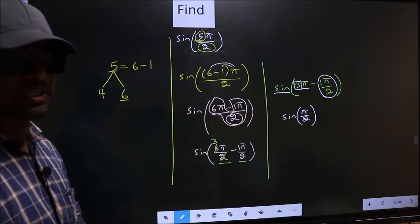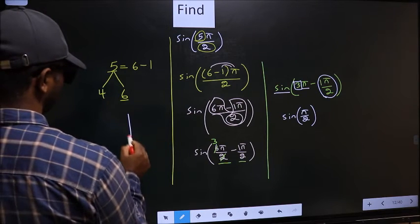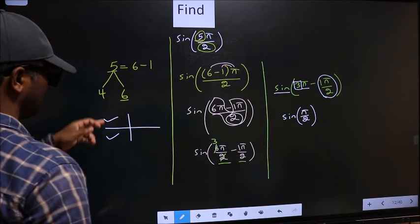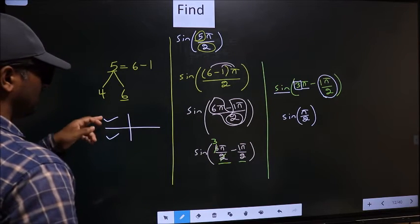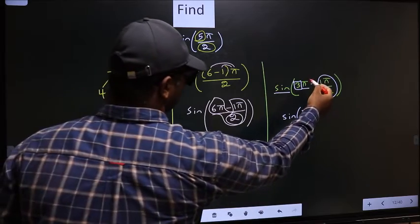And all the odd multiples of π, they lie in the second or in the third quadrant. Now to check in which quadrant does it lie, we should look at this symbol.